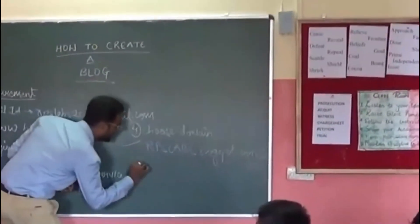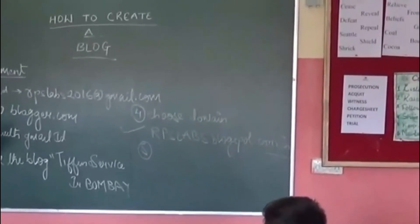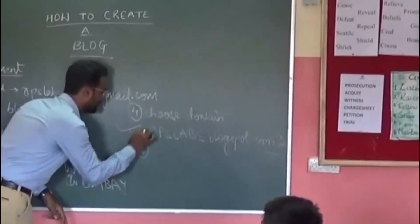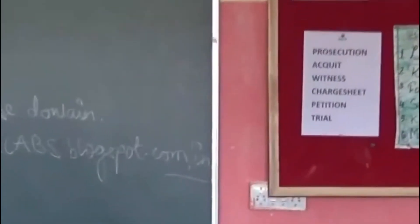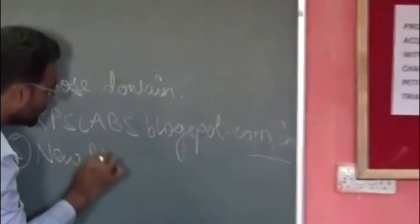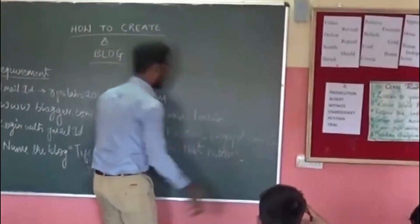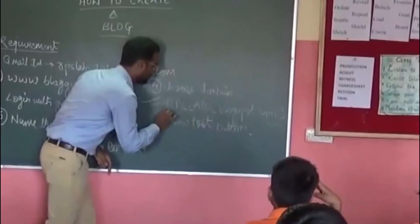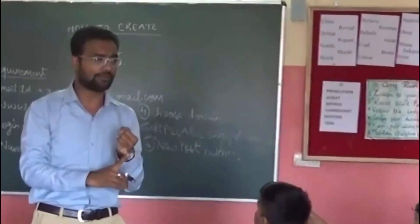So after this you have chosen your domain name, then what happens? You have to post — you have to pick up the post. Now the domain name is there. If someone searches www.rps.blogspot.com it will open, but there is nothing inside the blog. Then you have to create a post. Click on new post. While clicking on new post, there is an orange color button, and a page will open where you have to describe your blog — what it is all about.